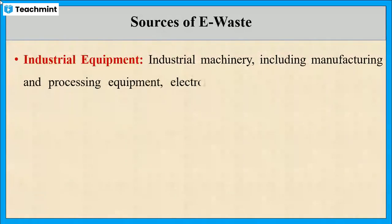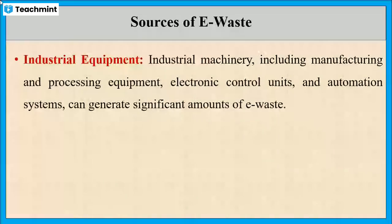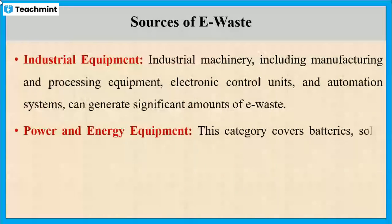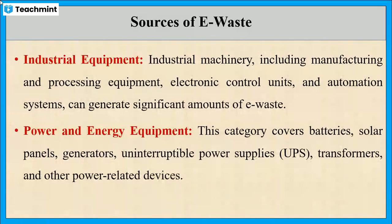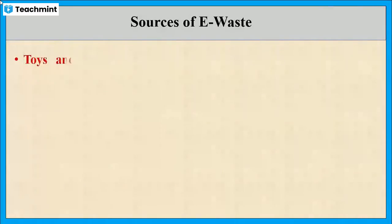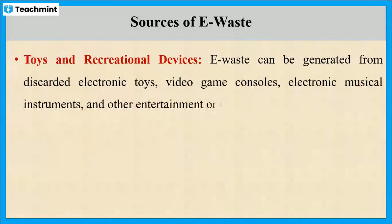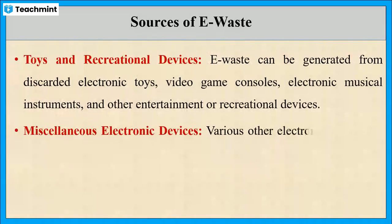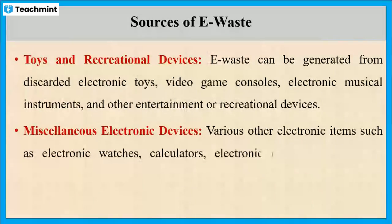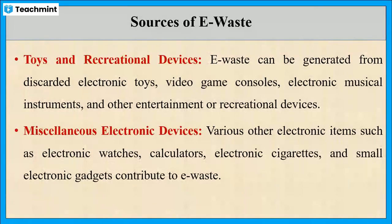Industrial machinery, electronic control units, and automation systems can also generate e-waste. The next source is power and energy equipment, which includes batteries, solar panels, generators, UPS, transformers, and so on. The next source is toys and recreational devices — discarded or broken electronic toys, video game consoles, and electronic musical instruments can generate e-waste. Miscellaneous electronic devices such as electronic watches, calculators, electronic cigarettes, and small electronic gadgets also provide e-waste.